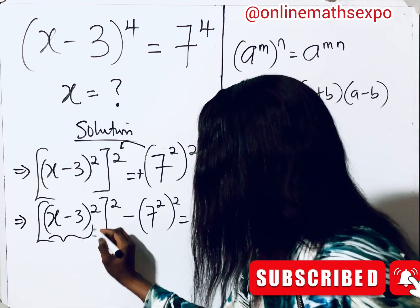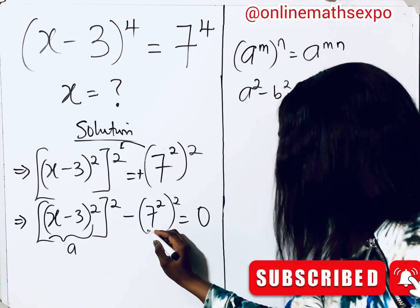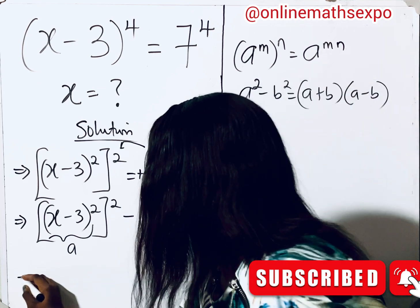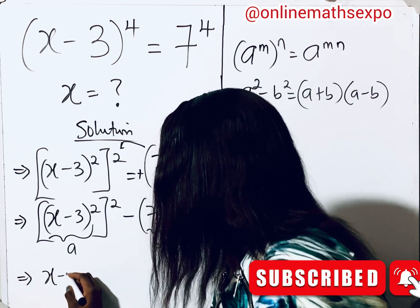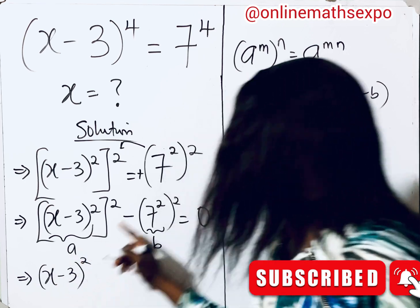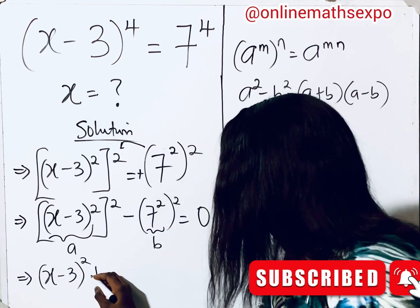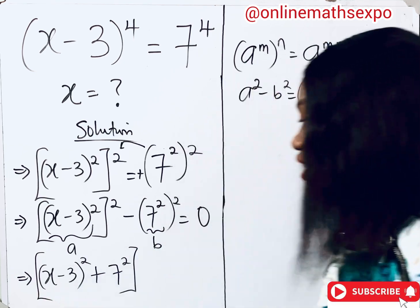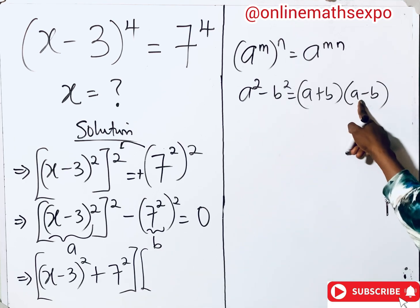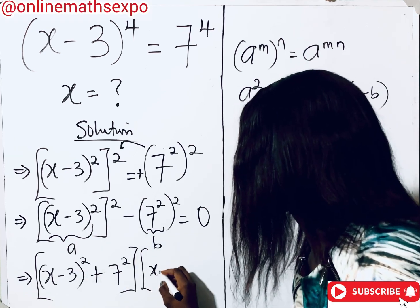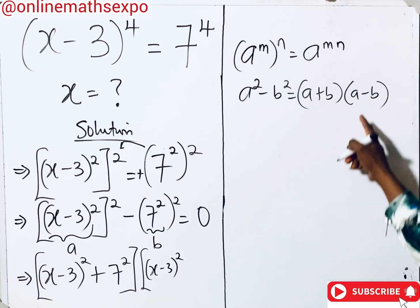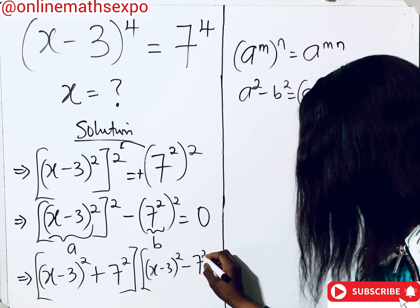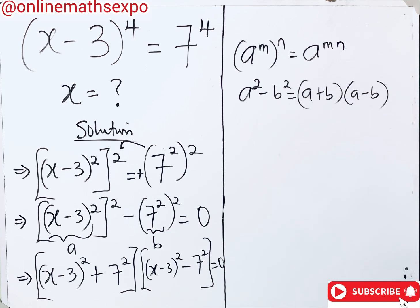The value inside the first bracket serves as a, and 7 squared serves as b. So applying the difference of two squares, we get: (x minus 3) squared plus 7 squared, multiplied by (x minus 3) all squared minus 7 squared, everything equal to 0. We are reducing it step by step.